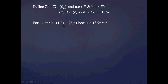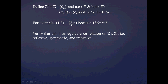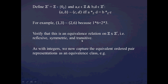For example, the ordered pair (1, 3) is equivalent to (2, 6) because 1 times 6 equals 3 times 2. You should verify for yourself that this relation is indeed an equivalence relation on Z times Z prime — that is, that it has the reflexive, symmetric, and transitive properties.